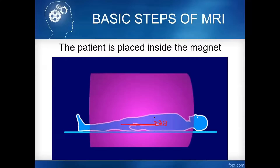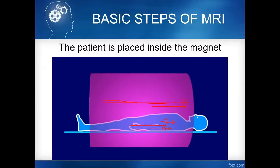Once we enter the MRI machine, all hydrogen protons will align. For example, if the direction of the magnetic field is from feet towards the head, all hydrogen protons will align in the same direction as the magnetic field. This means the patient becomes magnetized — developing a north pole and south pole, forming a dipole.